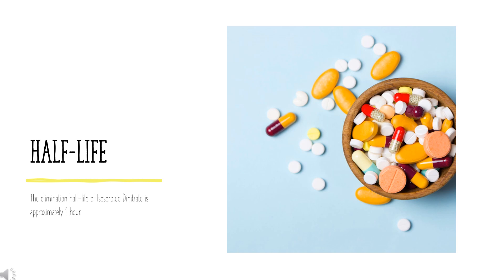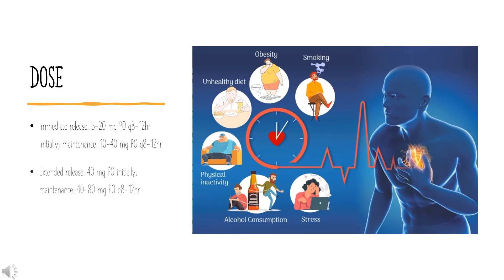Half-life: 1 hour. Dose for angina pectoris — Immediate release: 5–20 mg PO Q8–12HR initially; maintenance 10–40 mg PO Q8–12HR. Extended release: 40 mg PO initially; maintenance 40–80 mg PO Q8–12HR. Sublingual prophylaxis: 2.5–5 mg 15 minutes before performing activities likely to cause angina. Sublingual treatment: 2.5–5 mg, may be repeated every 5–10 minutes, not to exceed 3 doses in 15–30 minutes.